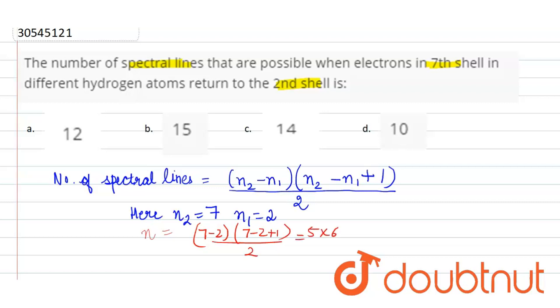That gives us 5 multiplied by 6 divided by 2, which is equal to 15. Simply by putting the values, we got the answer of 15. So option B here is the correct option.